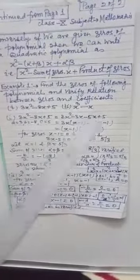Example 1: Find the zeros of the polynomial and verify relation between zeros and coefficients. These are the basic questions on what I discussed so far. First is 3x² - 8x + 5. Second polynomial is x³ - x. So first we will do the first part, 3x² - 8x + 5.